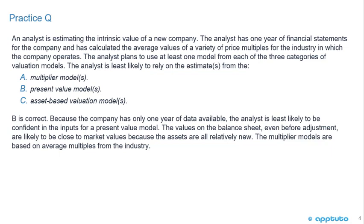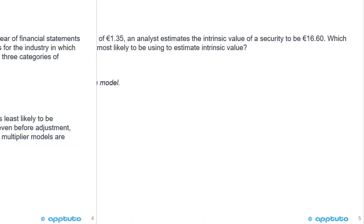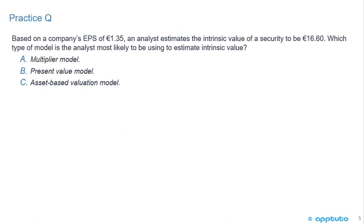B is correct. Because the company only has one year of data available, the analyst is least likely to be confident in the inputs for a present value model. The balance sheet values, even before adjustment, are likely close to market values because the assets are all relatively new. The multiplier models are based on average multiples from the industry, so if the company is operating close to industry standards, they would be reliable.